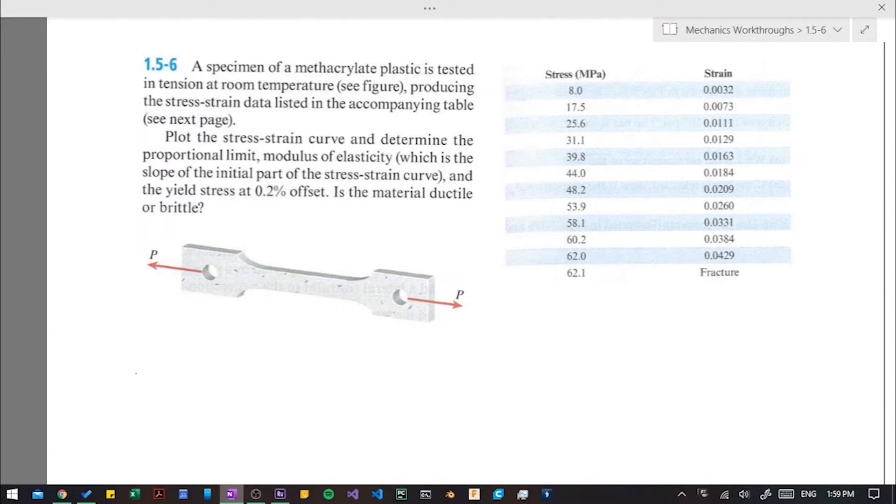Alright, so we've got this specimen here, and it is being pulled in tension. And we have our stress strain data from this test. So basically what this is saying is, at this strain, we have a stress of this much. And so we need to plot this on a graph, and then we're going to use that to find these other values.